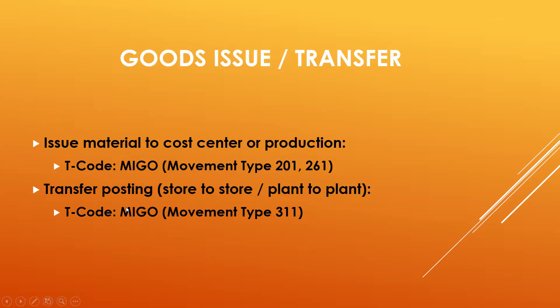Movement Type 311 is used between Storage Location to Storage Location. Movement Types 313 and 315 are used for a two-step procedure for Storage Location to Storage Location. Between plants, the end user uses Movement Type 301 for a one-step transfer, and 303 and 305 for a two-step procedure.